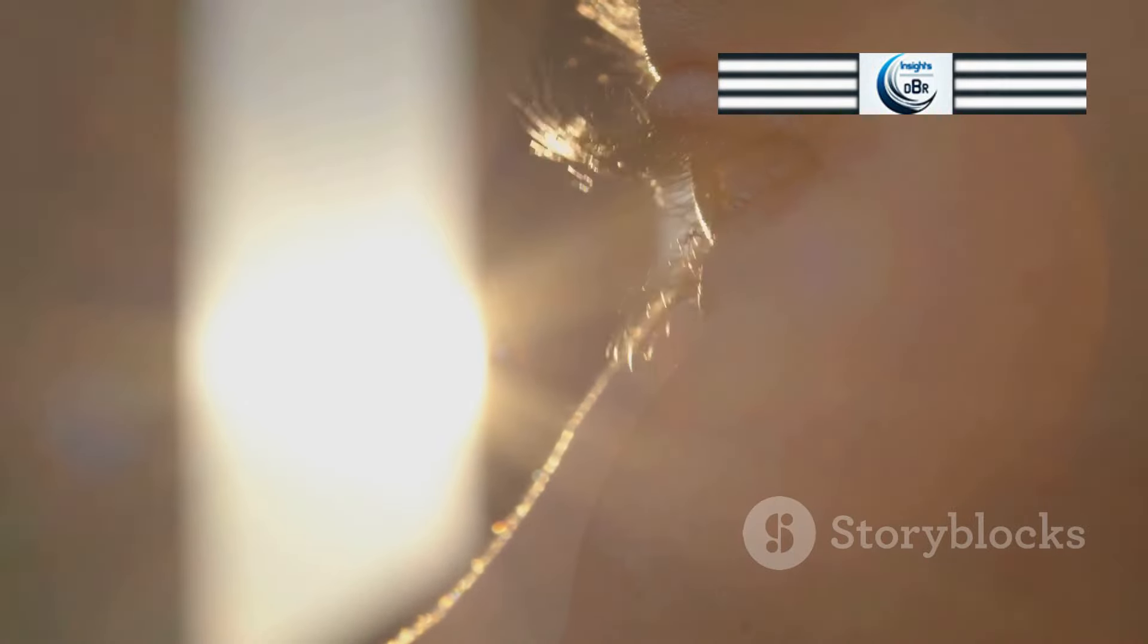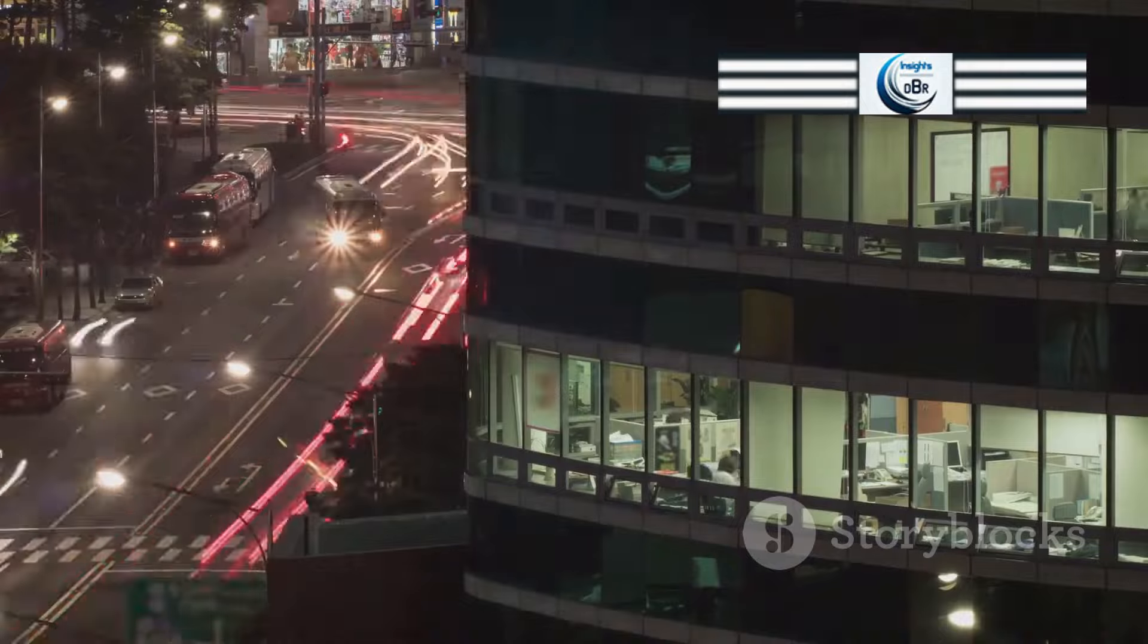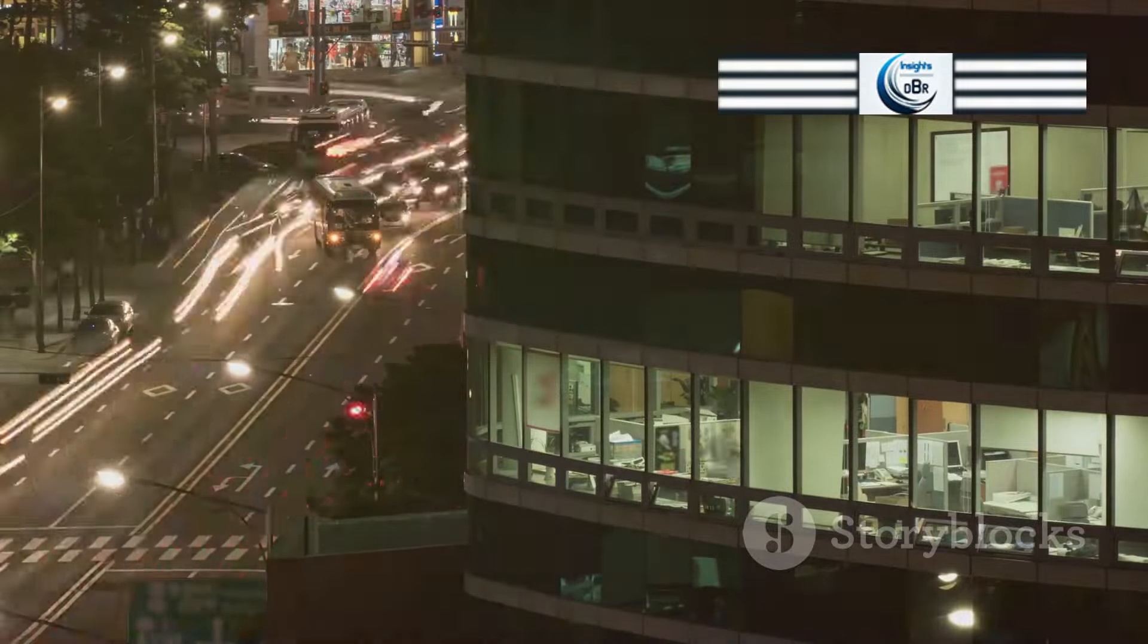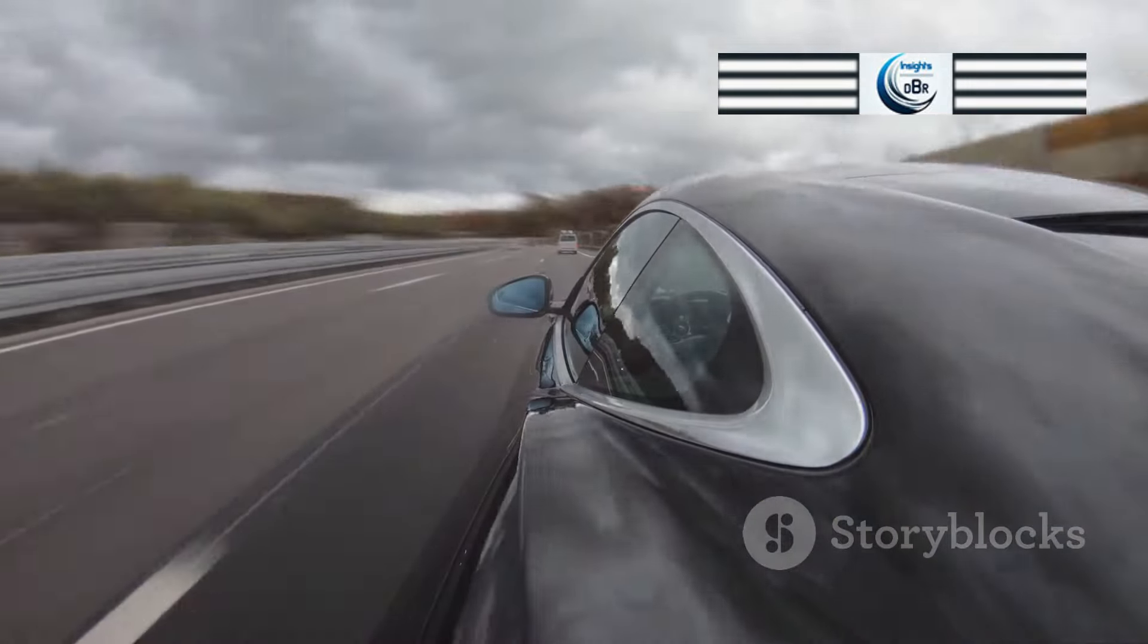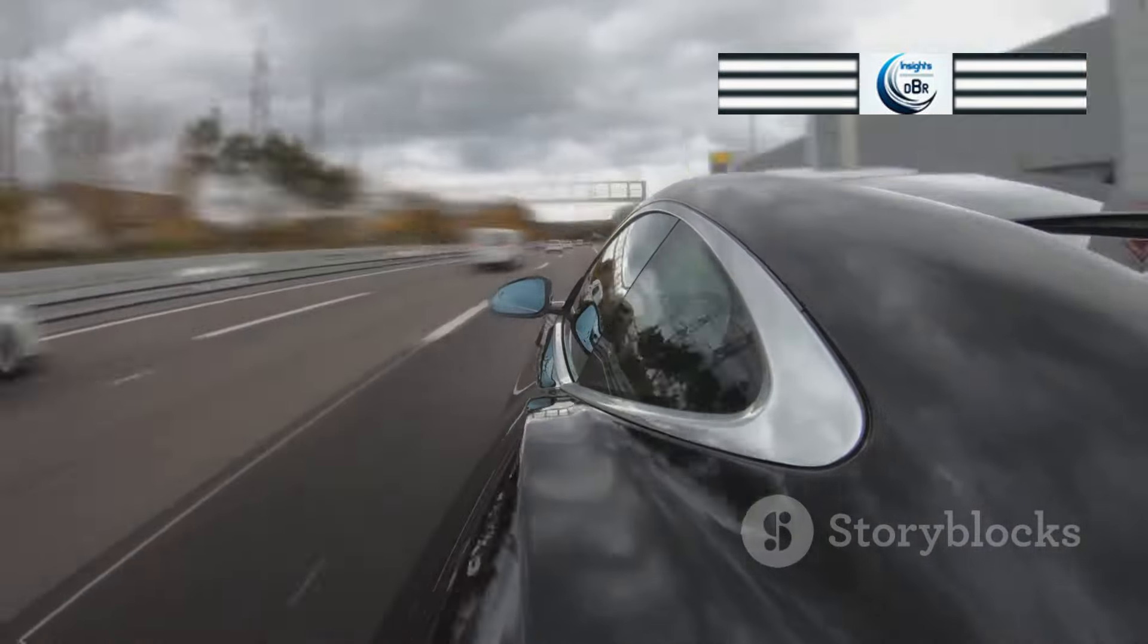Another everyday use of the speed of light is in the functioning of our vision. Light travels from objects to our eyes, allowing us to see. The speed of light makes this process happen so quickly that we perceive the world around us in real time. This is essential for activities like driving, where quick reactions to visual information are crucial for safety.